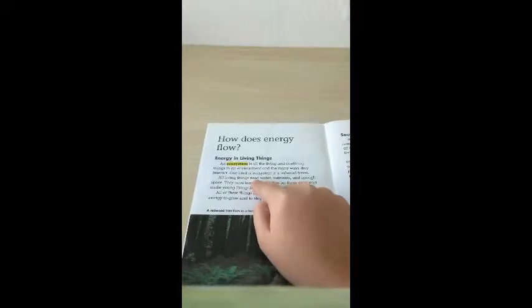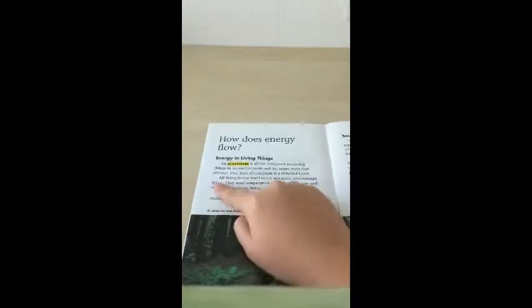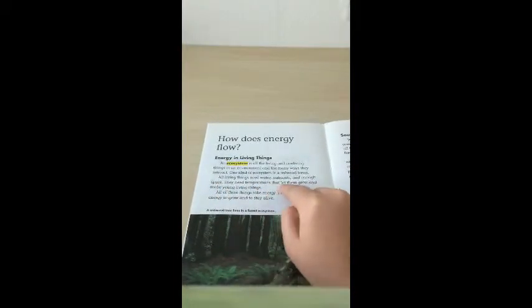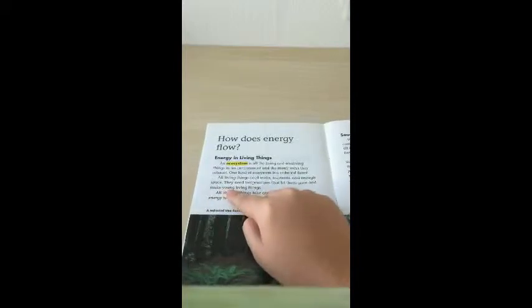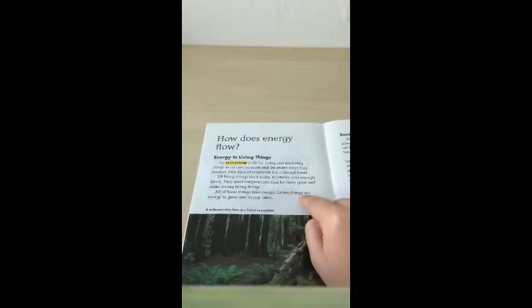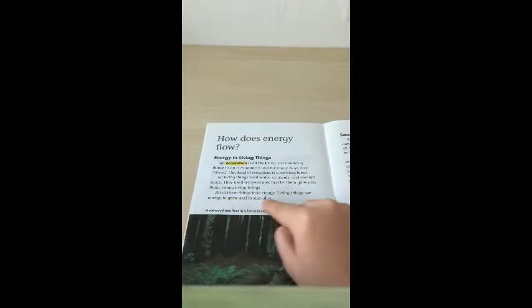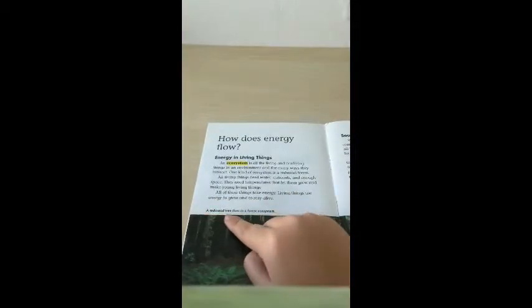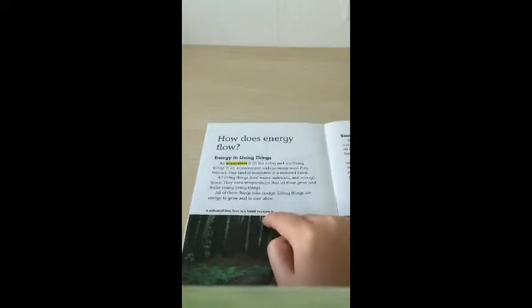All living things need water, nutrients, and enough space. They need temperatures that let them grow and make young living things. All of these things take energy. Living things use energy to grow and to stay alive. A redwood tree lives in a forest ecosystem.